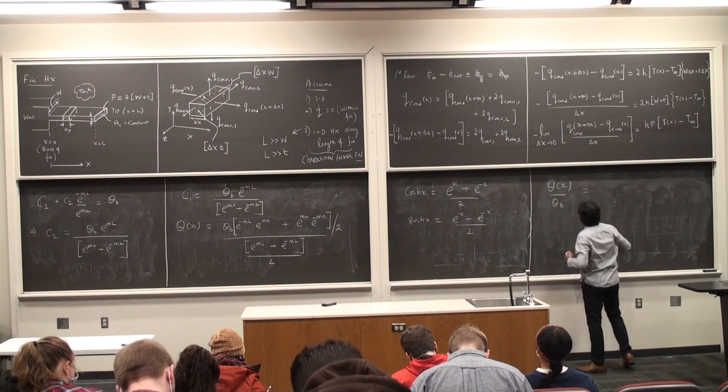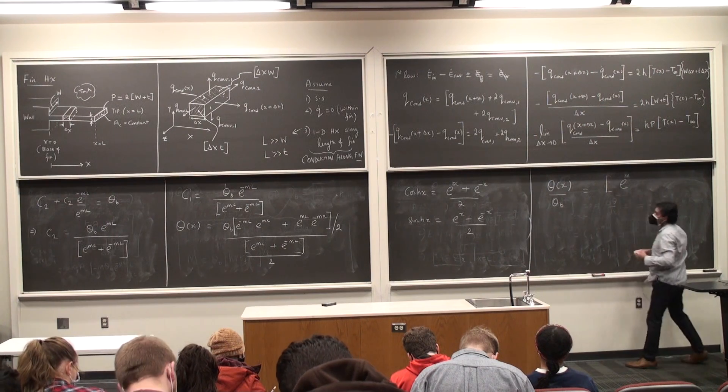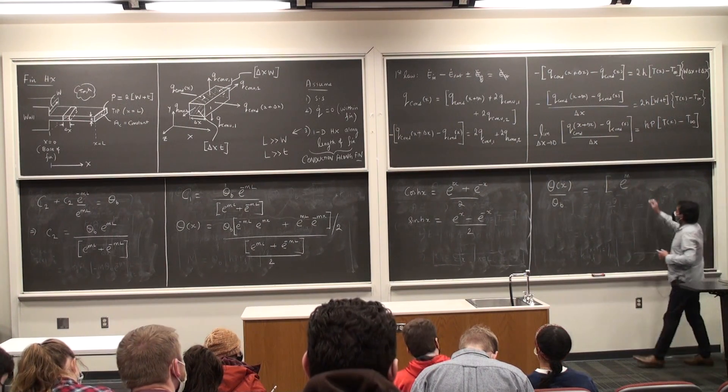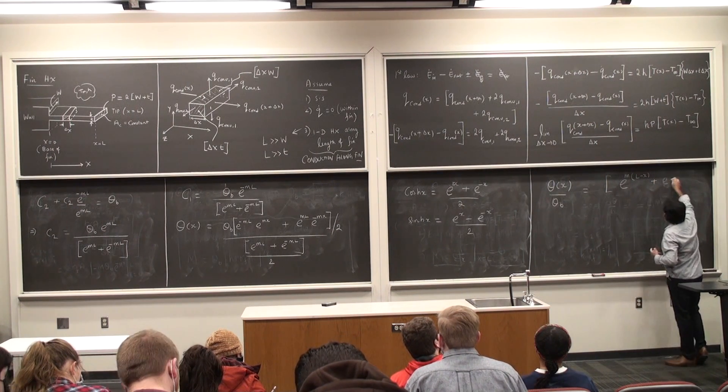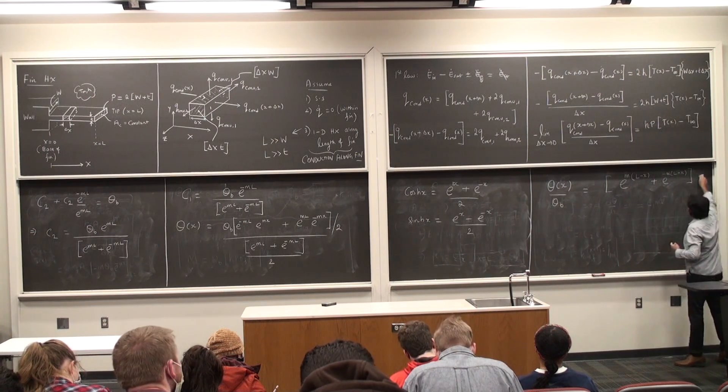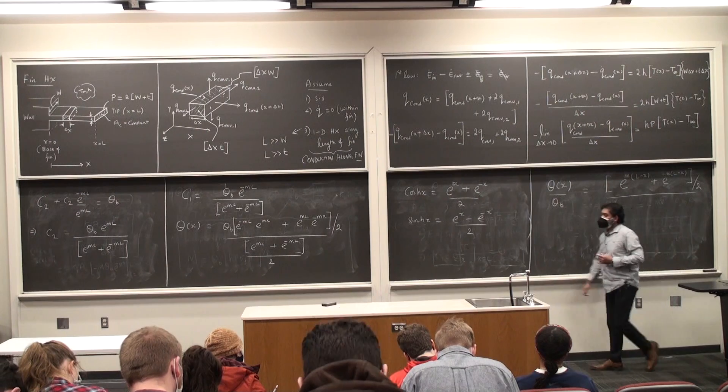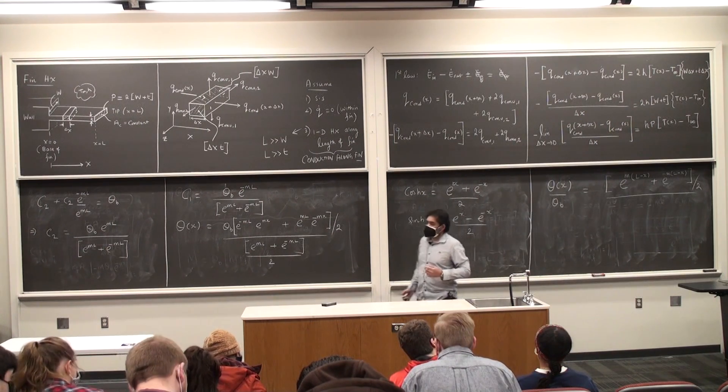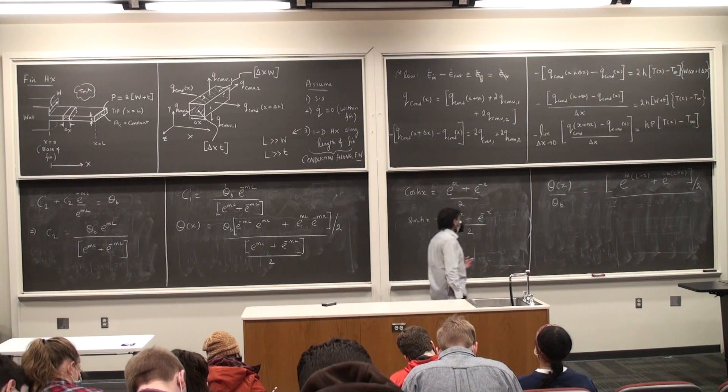E to b, this is e to the power m is a common factor, times l minus x, e to the power minus m times l minus x divided by 2. Divided by the other feature e to the power m plus e to the power minus m by 2.